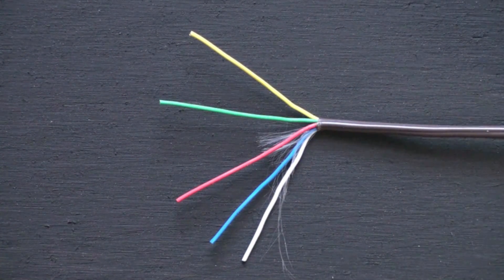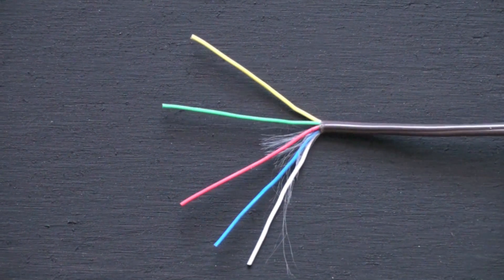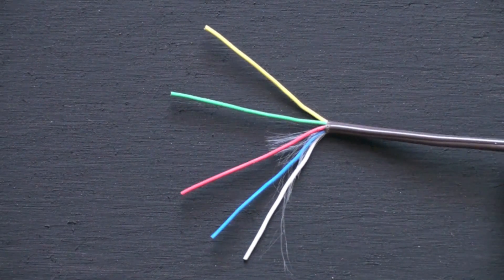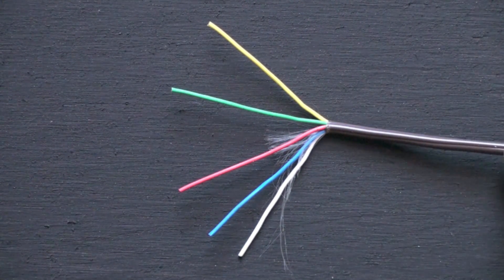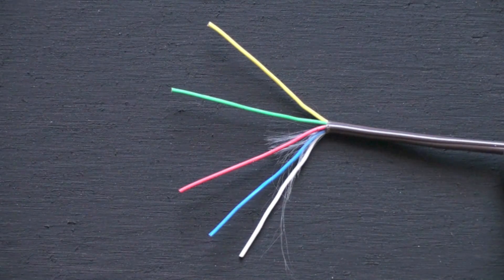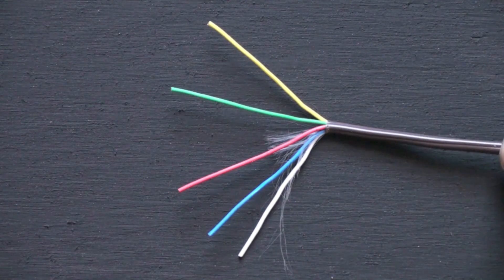Okay, thermostat wiring color codes - kind of nonsensical the way we do it, but it is the way we pretty much do it. Now I've got a standard old five-wire thermostat wire here. I actually recommend you use an eight-wire.